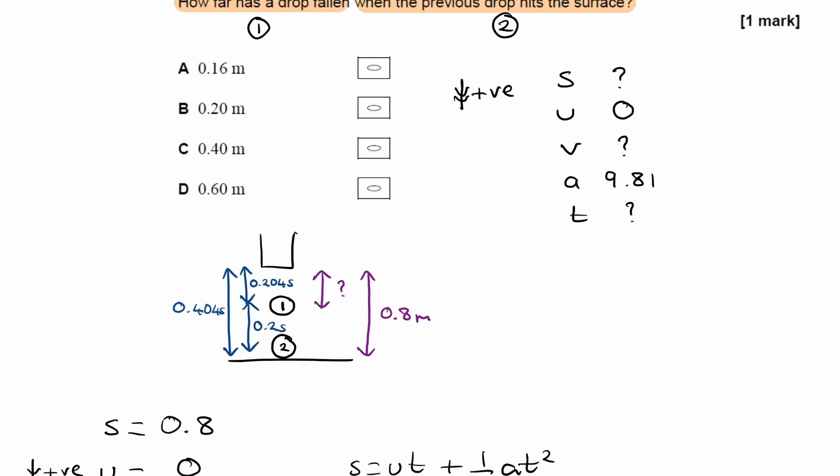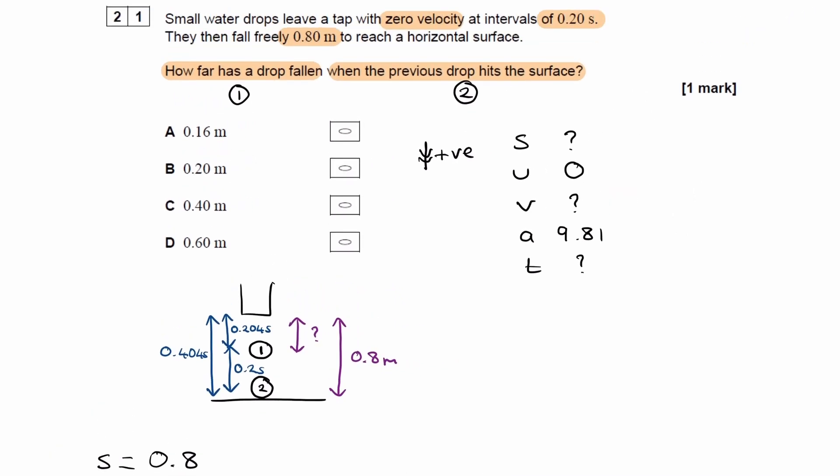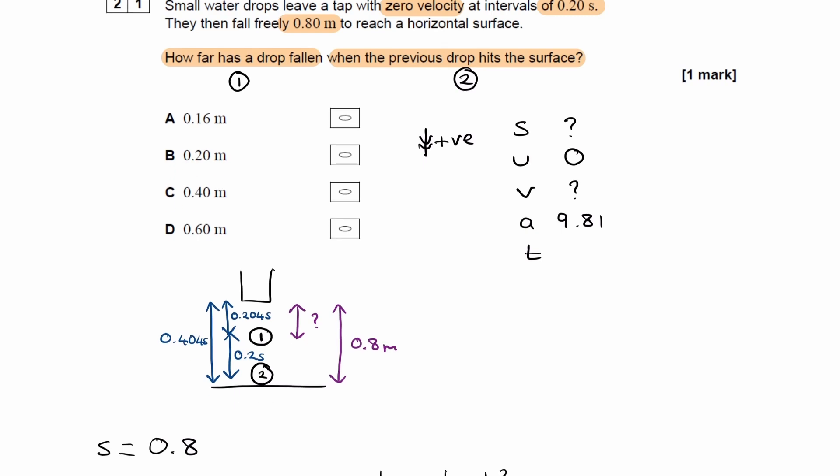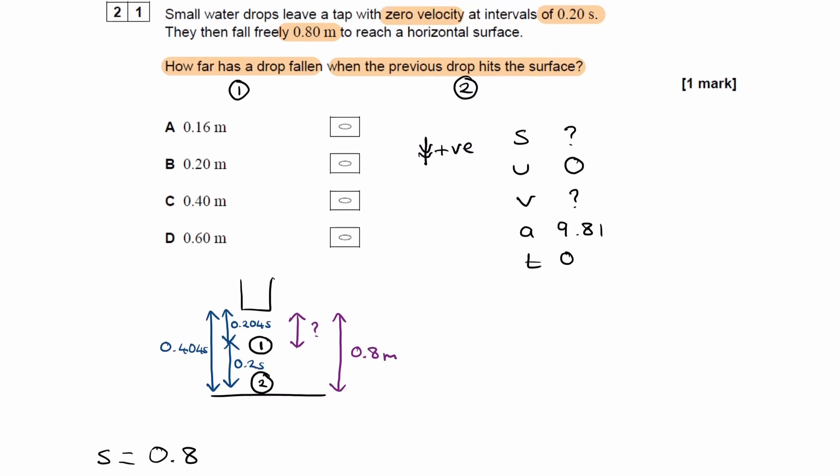So we can now put that into our SUVAT table for drop one. So this time that we have here will be 0.204 seconds. And now we can work out drop one's distance fallen. We can use s equals ut plus a half at squared. U again is 0. So then the distance fallen would be a half times 9.81 times t squared.